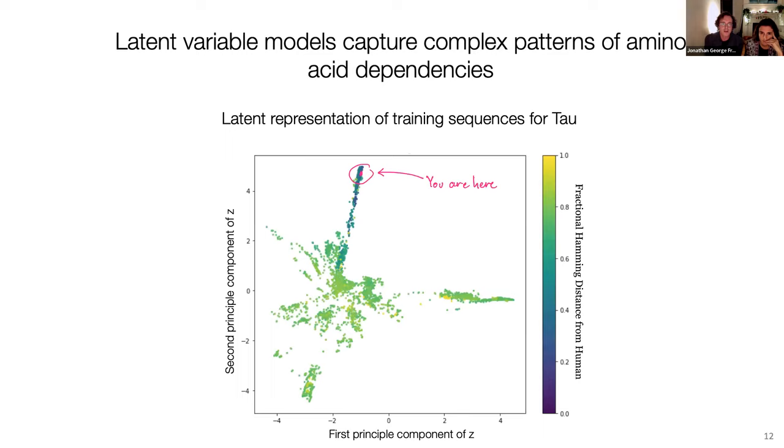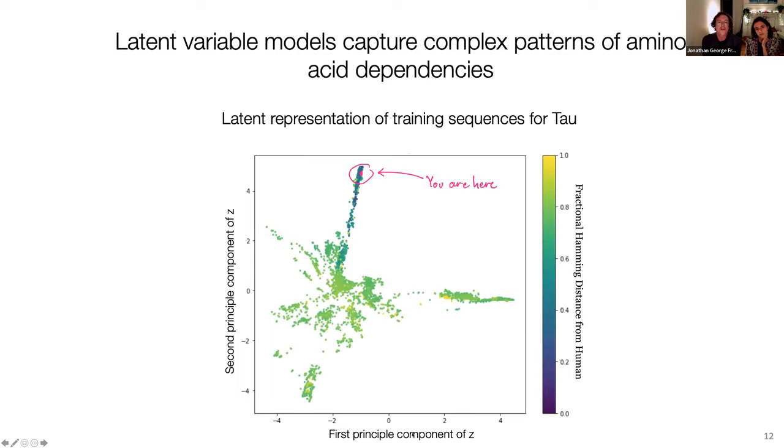So just to explore this idea of principal component analysis a little bit further, what we've plotted here are the first two principal components of this latent representation of the data. So what we have here is each data point corresponds to a sequence in the training set of the model. And this is the multiple sequence alignment for tau protein. And what we see here is that we've colored the data by its fractional Hamming distance. And if we look at all possible single amino acid substitutions, they live in this tiny pink blob here. So this is something that I find really quite remarkable about these models, actually, is that we're training these models on extremely diverse sequences. And yet the task that we're hoping to apply these to is to resolve variations in fitness on the scale of this tiny pink dot here. So this sort of separation in scales is something that I find pretty amazing that we can get something useful from this at all, actually.